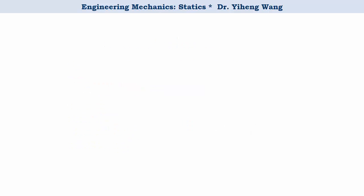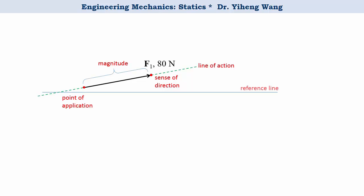Like other vectors, a force can be represented by an arrow. It can be fully characterized by its point of application, its sense of direction, and its magnitude. The direction of the force can be described by the angle made by its line of action and a reference line.